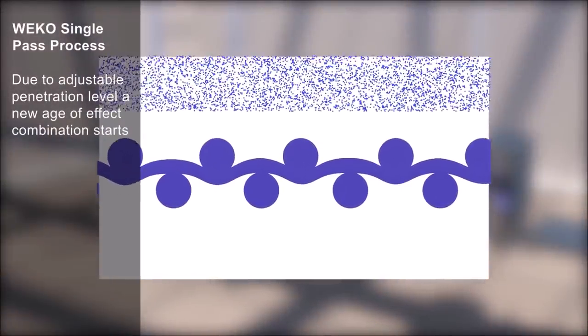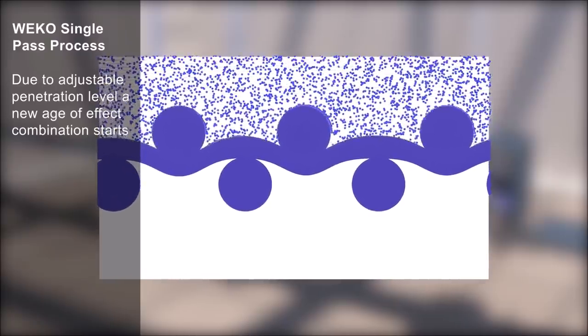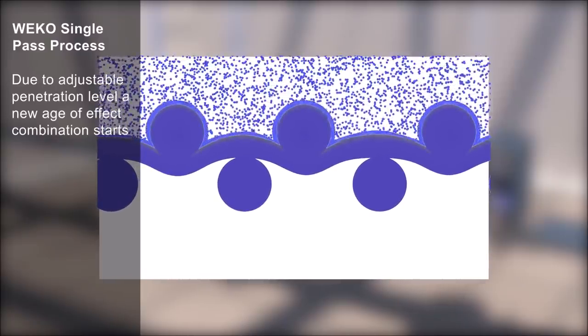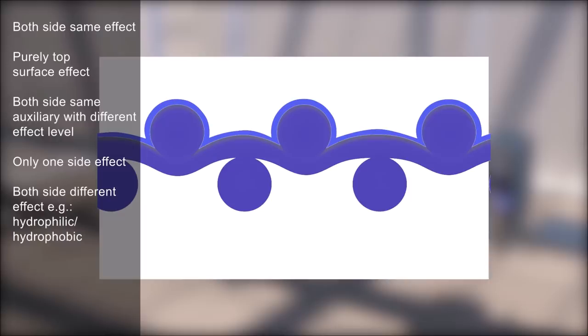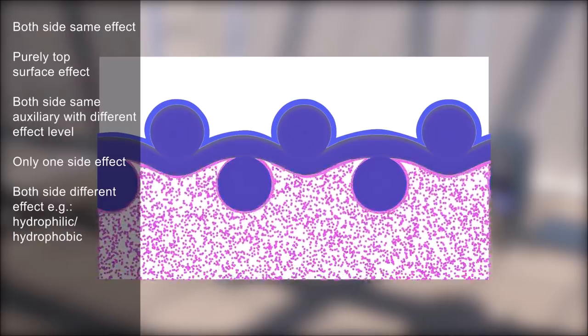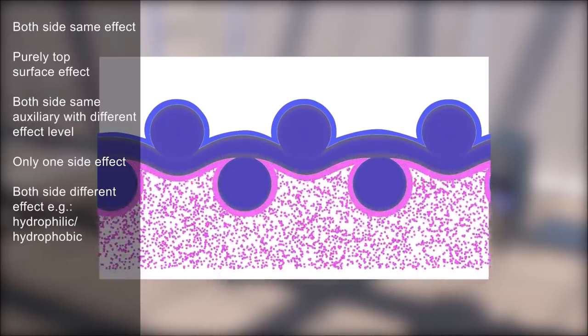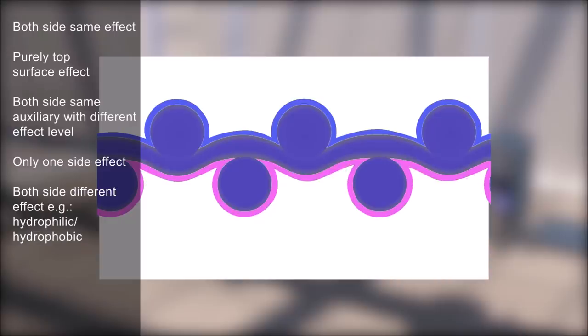The Weco single pass process features adjustable penetration level, enabling a new age of effect combinations. Options include both sides same effect, purely top surface effect, both sides with same auxiliary but different effect levels, only one side effect, or both sides with different effects, for example hydrophilic and hydrophobic.